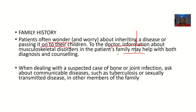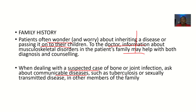For example, if the doctor discovers that there is a muscle disorder or a problem with bones that runs in the family, it can now counsel you on how to choose your spouse. When dealing with a suspected case of bone or joint infection, ask about communicable diseases such as tuberculosis or sexually transmitted diseases in other members of the family.